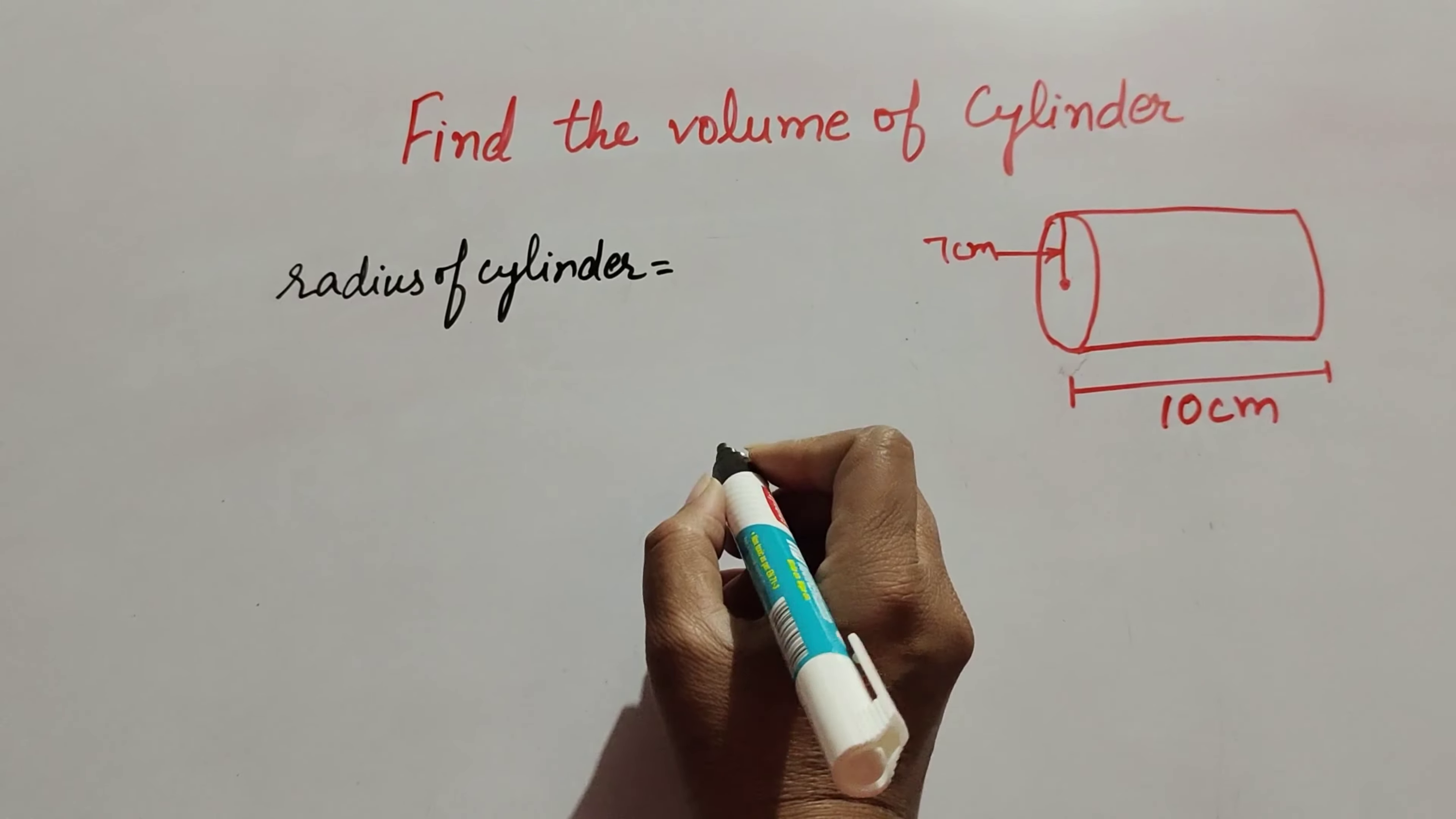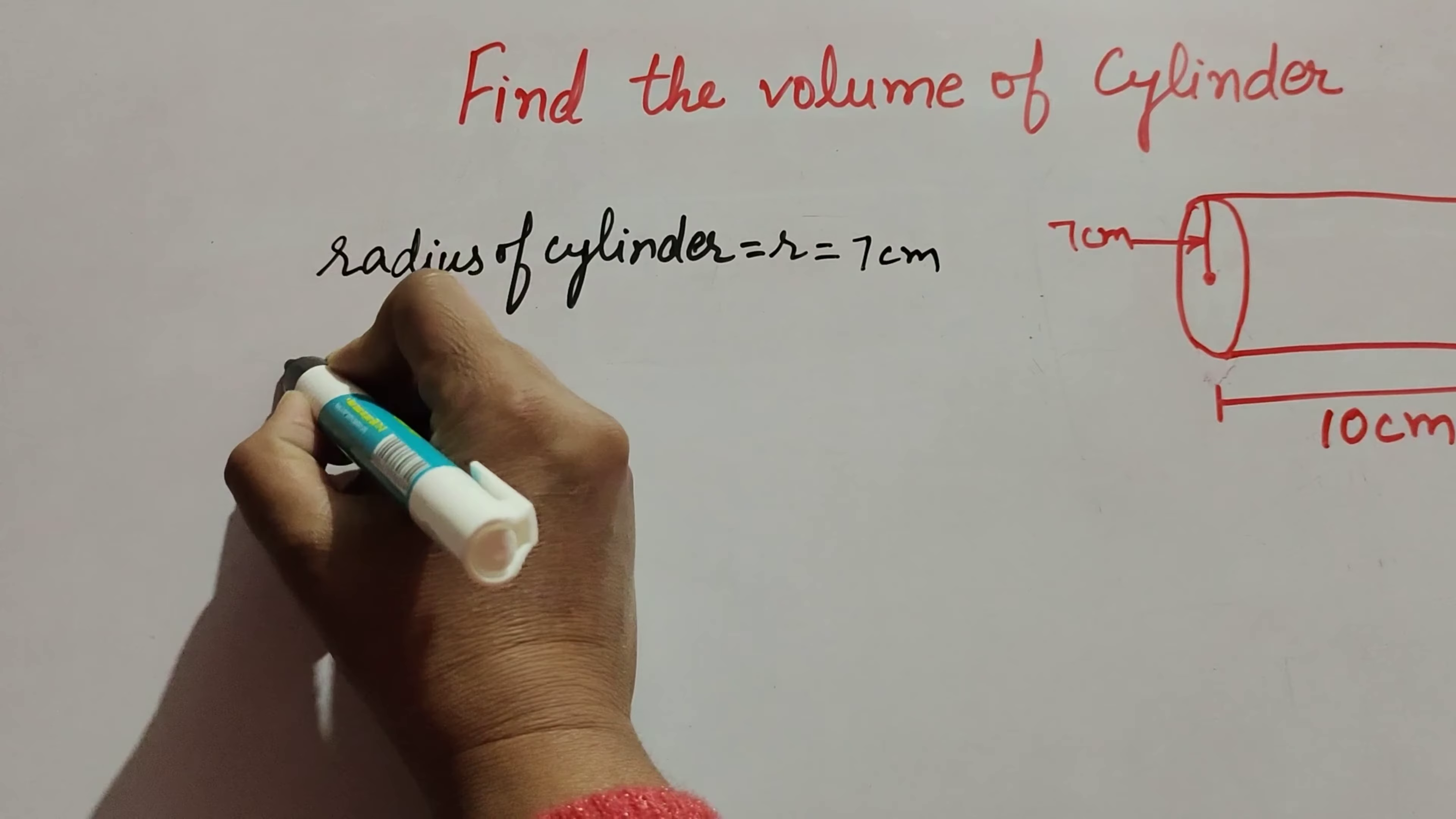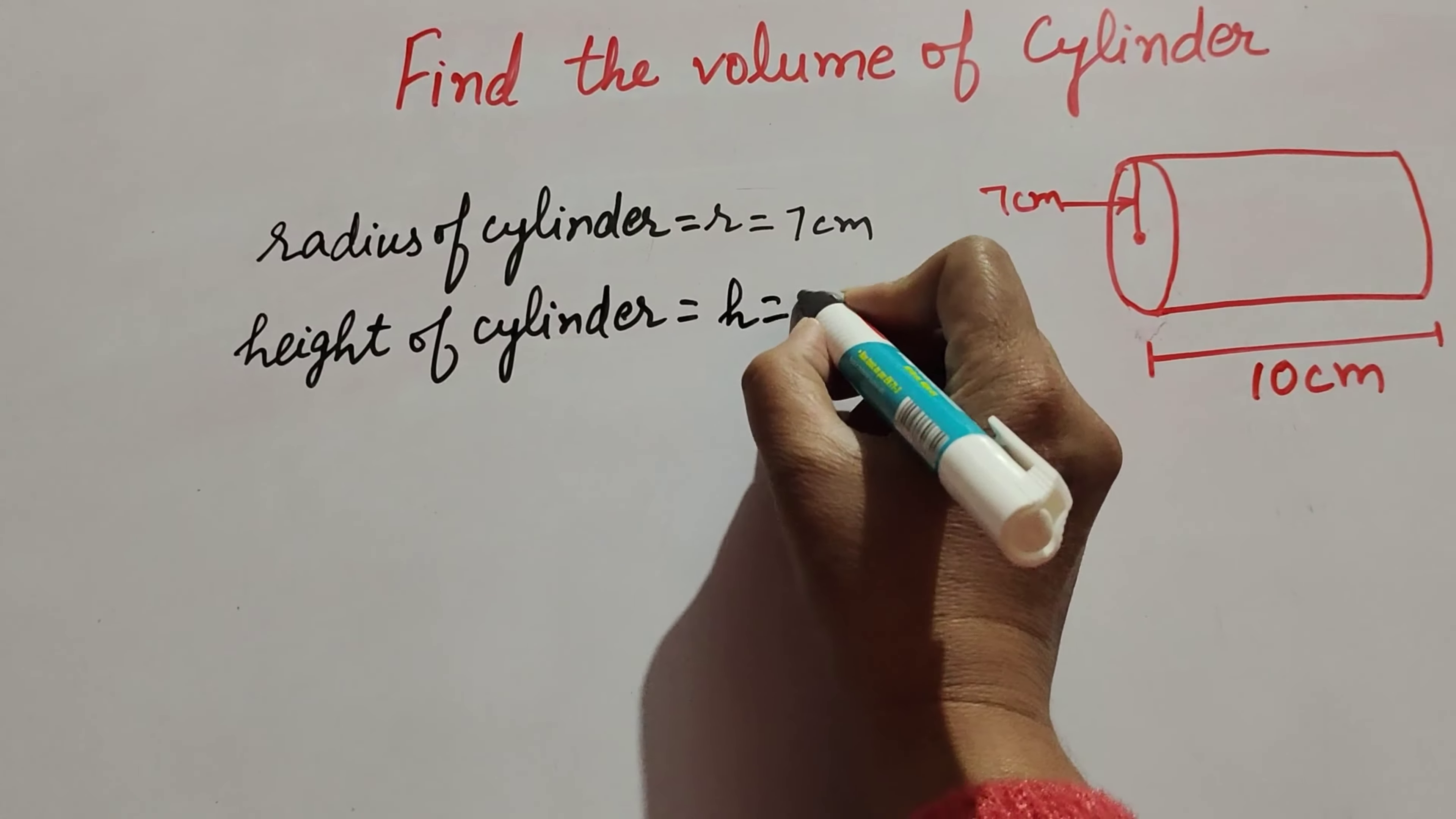Radius of the cylinder: R = 7 centimeters. It is given. Then, height of the cylinder: H is the height of the cylinder. It is equal to 10 centimeters.